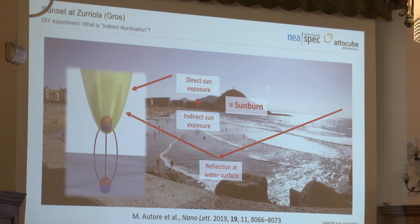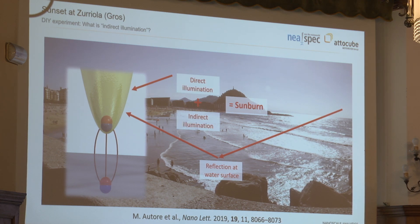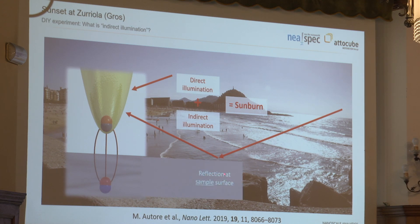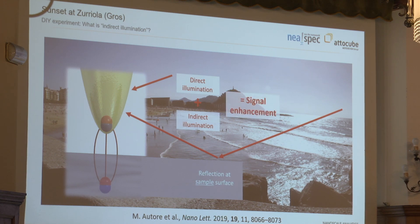And the same works if you use an AFM tip. Now you have direct illumination, and you have indirect illumination, which is now reflection at the sample surface. And if you sum those two up, you get signal enhancement — it's great. So if you're struggling with signal-to-noise, consider using a highly reflective sample.